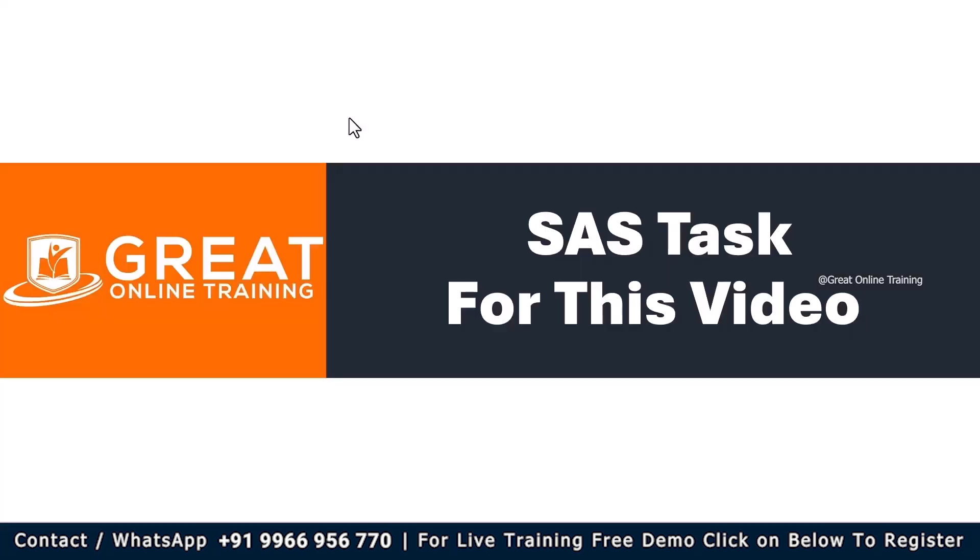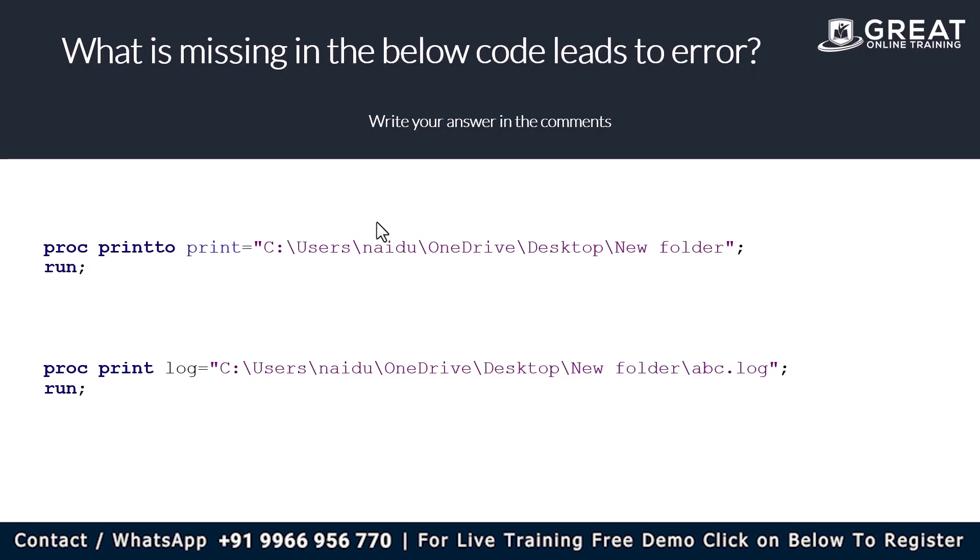So the task in this video is: what is missing in the below code that leads to an error? There are two lines of code — I know what the mistake is, I wanted you to do it. Based on your understanding of today's video, I'm expecting you to look back and see what exactly is causing an error in your program. Try to figure it out and please write your answer in the comments so that I'll reply back with the right answer. Thank you for watching — please click Like if you enjoyed this video, subscribe for more updates, and if you have any questions or comments, please write in the comment section. Thank you all.